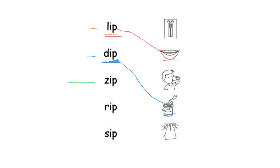Now let's read this word: Z-I-P, zip. Where's the picture of the zip? Yes, this one. So you draw a line.